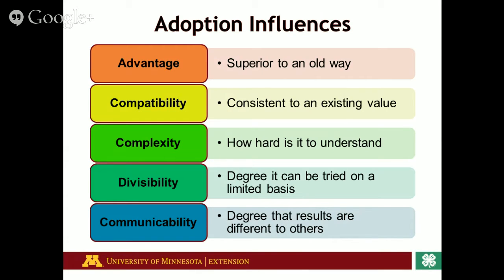The third factor is complexity — how hard is it to understand? We see this with older audiences a lot. If it's truly complex and something extremely foreign to them, they may not choose to adopt that idea or item. Take technology for example. Older generations typically struggle because it wasn't something they grew up with, whereas younger generations grew up with technology all throughout school. If you hand someone in elementary school a new smartphone, they'll typically be able to navigate it because it's been embedded within their culture from the time they were really small.